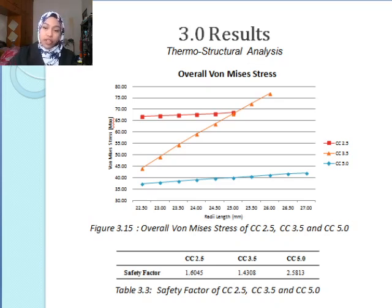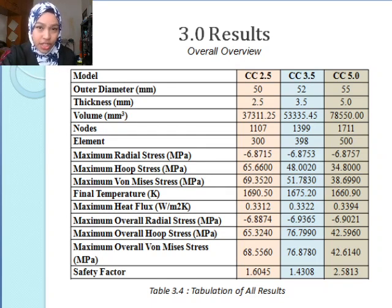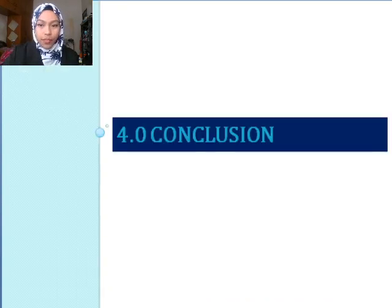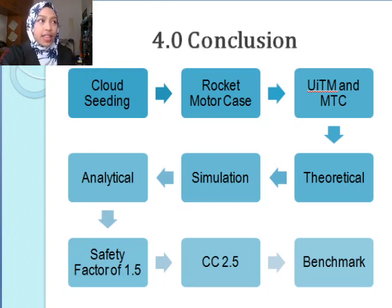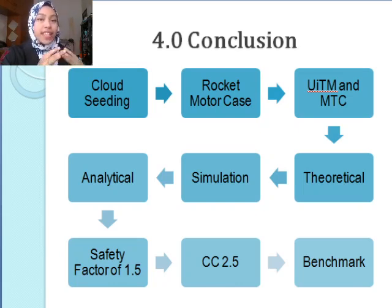This is because of the large temperature difference and also the heat flux. Looking at the overall overview, there is a difference in terms of maximum stresses, final temperatures, maximum heat flux, and maximum overall stresses. When we take into account the thermal and structural load, safety factor is what we are really looking for. The conclusion of this whole study is that a cloud-seeding rocket comprises of several parts, such as the igniter, the propellant, the fin, nose cone, and nozzle. When focusing on the rocket motor case, it is known as a combustion chamber. The collaboration between UITM and MTC contributes to a thorough theoretical study to verify the simulation with analytical methods.